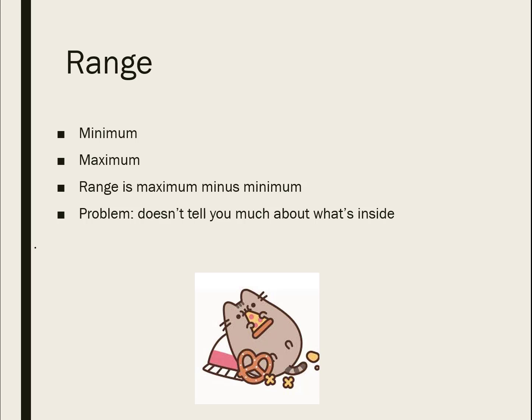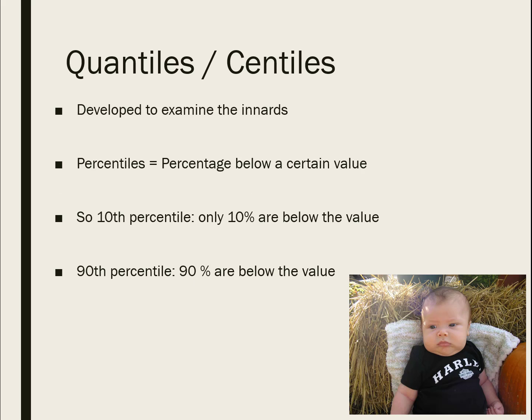First, a simple one: the range. The range is where you take the minimum value and the maximum value and subtract the minimum from the maximum. Bigger numbers indicate data is really spread out; smaller numbers indicate the data is compact. But the range is honestly kind of boring, because it doesn't tell you much about what's happening inside your data.